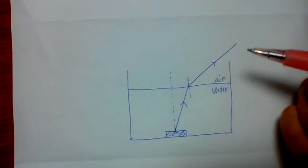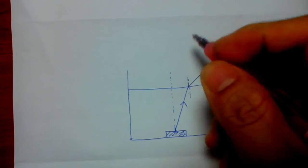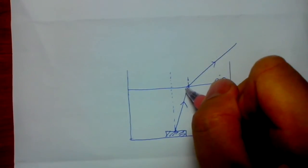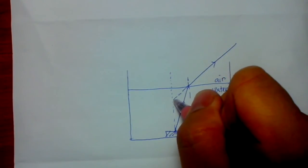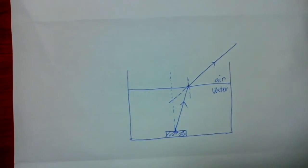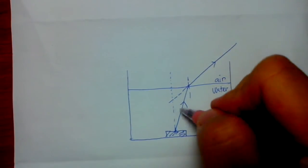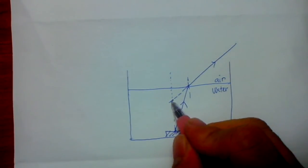But we can extend the reflected ray backwards until it intersect with the vertical line or the normal above the object which is the coin. So this is the position of the image.